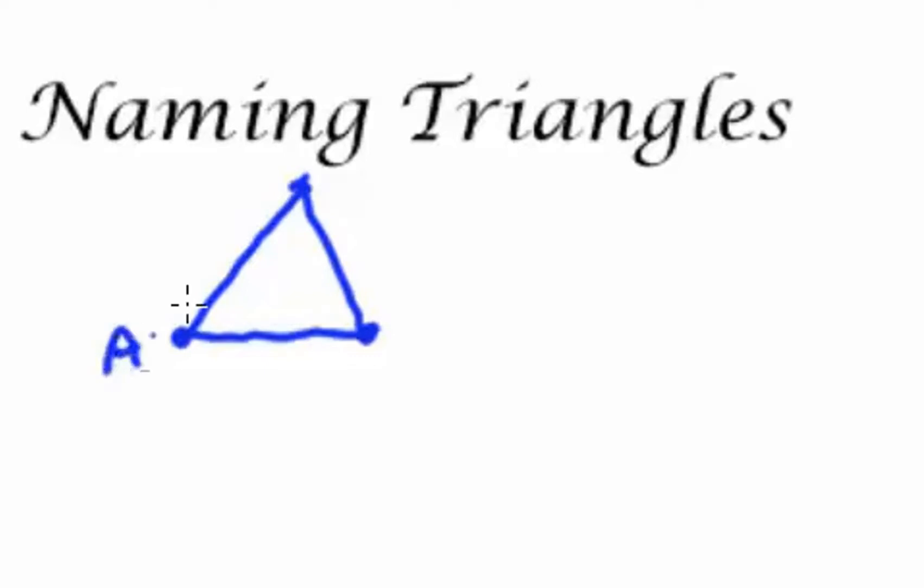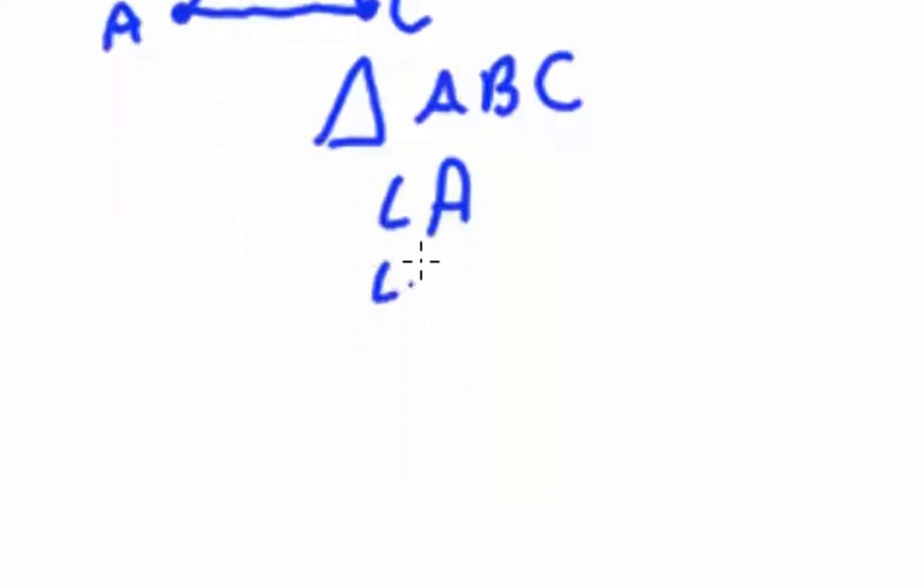A triangle with three points has letters for each of those points. In this case, point A, point B, and point C. Those points are angles. I can call this triangle triangle ABC by incorporating all its points or all its angles.